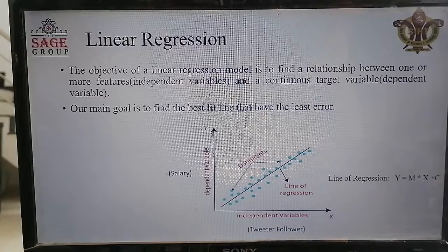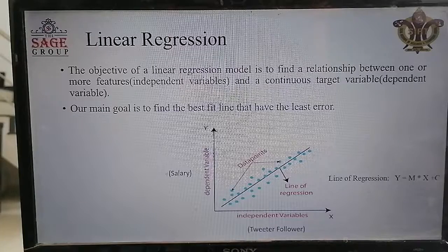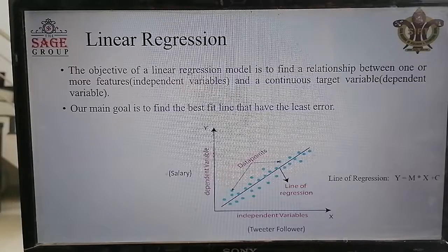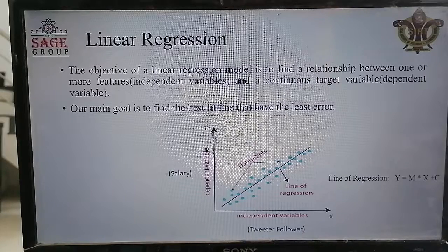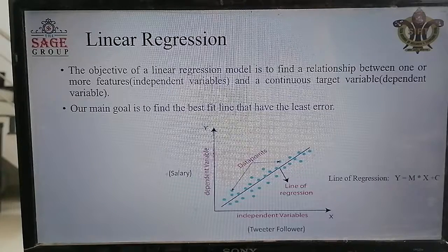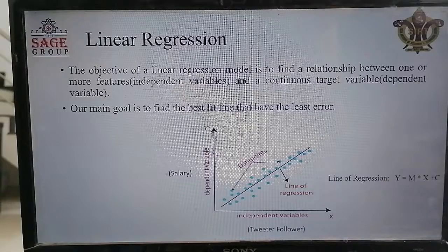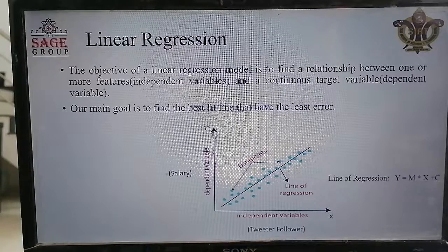Linear regression finds out the relationship between the dependent and the independent variable, and by using the best approximate relationship it can make correct predictions. In this plot, on the x-axis is the tutor follower which is an independent variable, and on the y-axis is the dependent variable which is salary. The blue dots are representing the training samples — each individual sample.